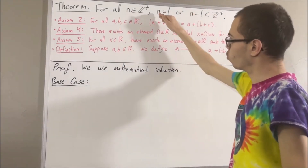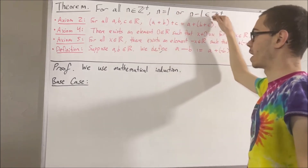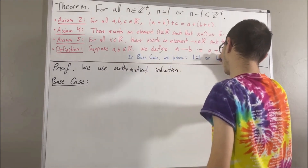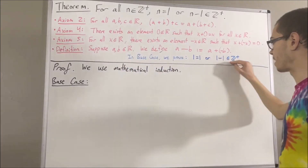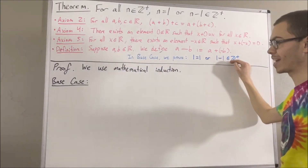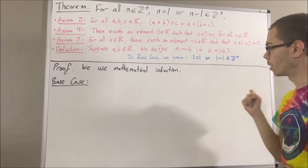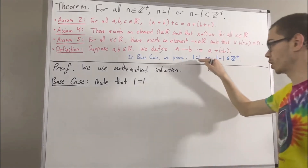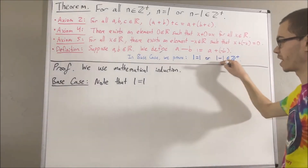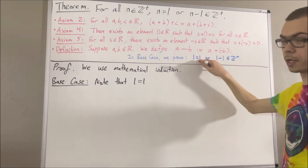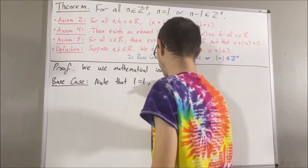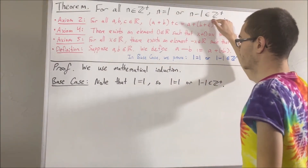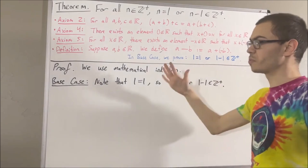So, we're trying to prove: 1 is equal to 1, or 1 minus 1 is a positive integer. To prove this statement, all we have to do is show that at least one of them is true. Well, clearly, 1 is equal to 1. So, since 1 is equal to 1, we have that at least one of these statements is true. So, we can conclude that 1 is equal to 1, or 1 minus 1 is a positive integer. We have shown that this statement is true in the case where n is equal to 1, so this completes the base case.